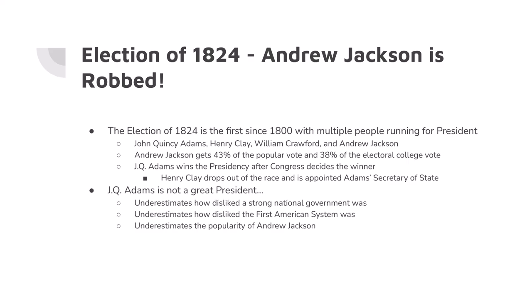When we talk about Andrew Jackson, you have to actually talk about the election of 1824. It's not an election that Andrew Jackson won, but it's really going to set up a disagreement between two people. The election of 1824 is the first election since 1800 with multiple people running. You've got John Quincy Adams, son of president number two John Adams; Henry Clay from Kentucky; William Crawford from Georgia; and Andrew Jackson from Tennessee. Jackson gets the most votes — 43% of the popular vote and 38% of the electoral college vote.